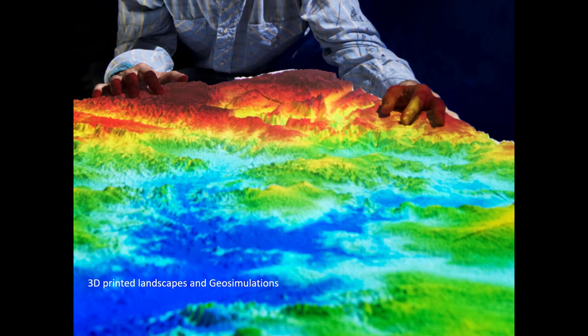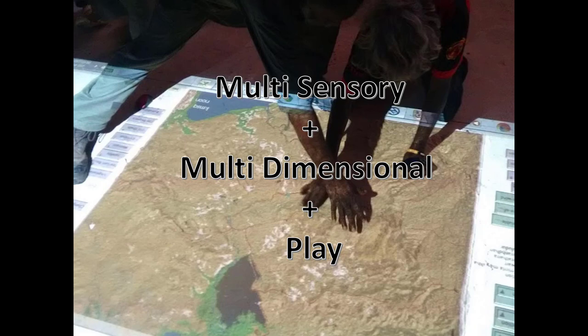So that's a bit of background on how I came to be doing this sort of work. I now want to outline what I think are the key attributes of projection-augmented landscapes and why they're effective for engaging communities and discussing spatial and mapping information. There are three key factors: the 3D landscapes are multi-sensory, they're multi-dimensional, and through geo-simulation they encourage play.